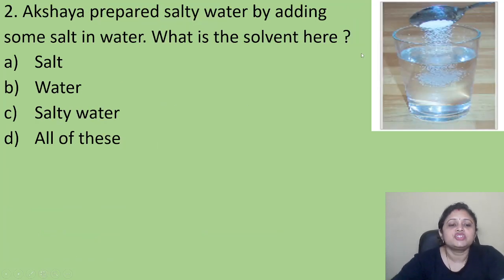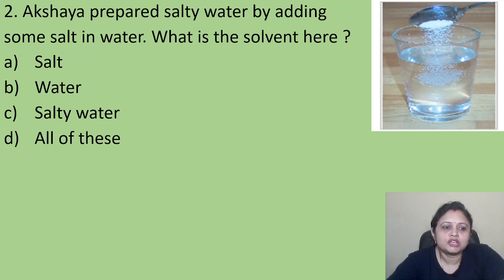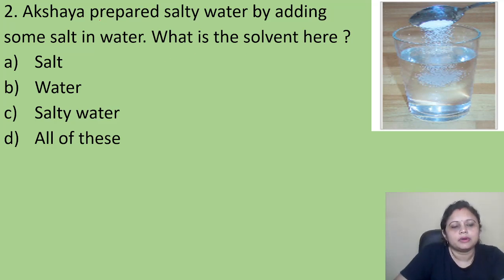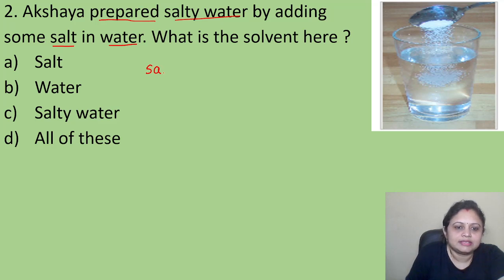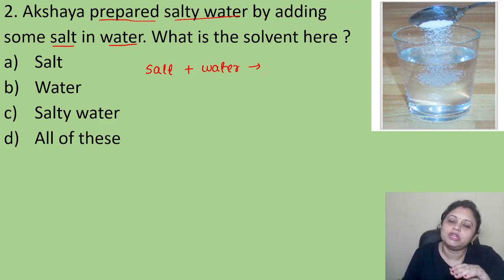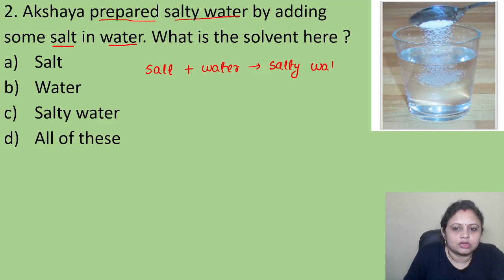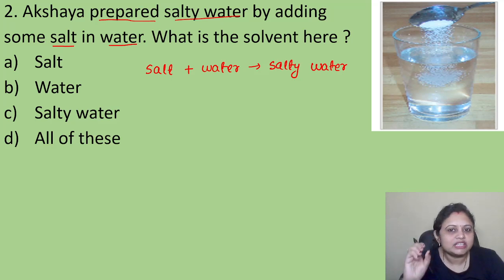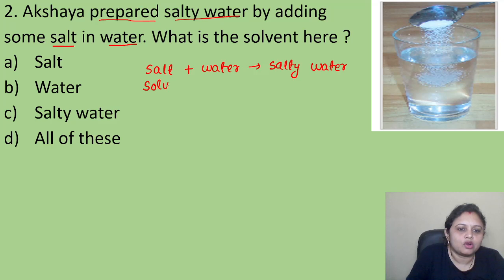Coming to the next question: Akshay prepared salty water by adding some salt in water. What is the solvent here? Option A: salt. Option B: water. Option C: salty water. Option D: all of it. Akshay has taken salt and added it to water. Salt is completely dissolved in water, forming salty water. The substance present in the smaller amount — salt — we call the solute. The substance present in the larger amount — water — we call the solvent.